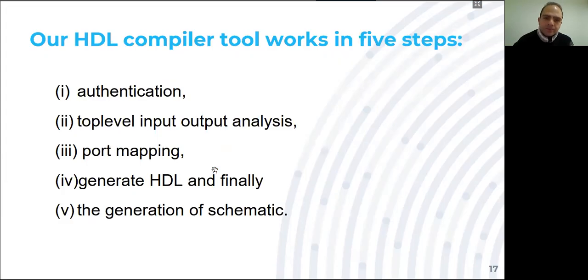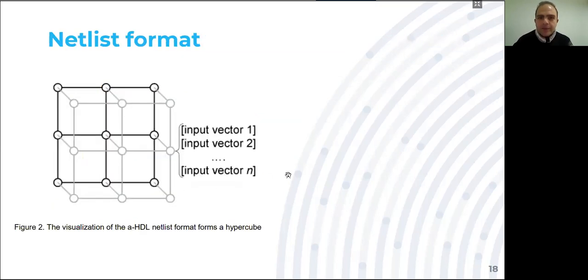The HDL compiler consists of multiple stages, the most important are the port mapping and the generation of the HDL. About the HDL format, this is a 3D space format. We have for each digital component three dimensions: x, y, z. And for every component, we give the inputs and the outputs, and the tool calculates all the necessary, for example, bit widths.